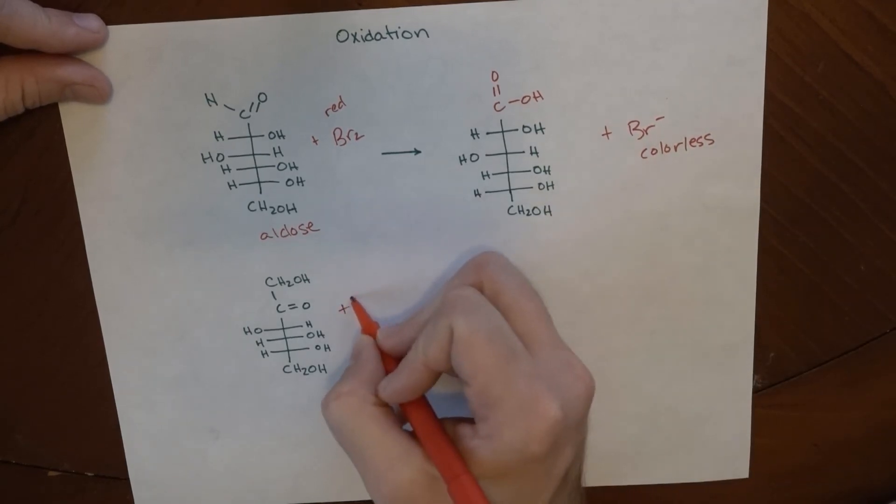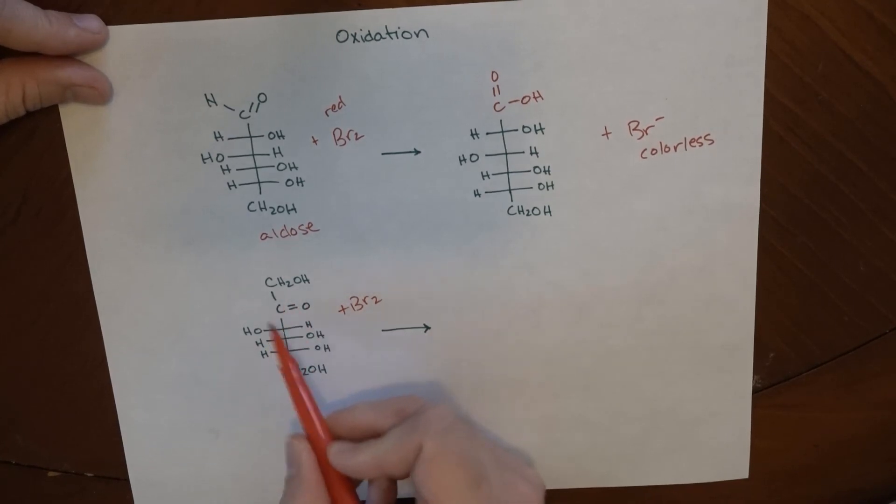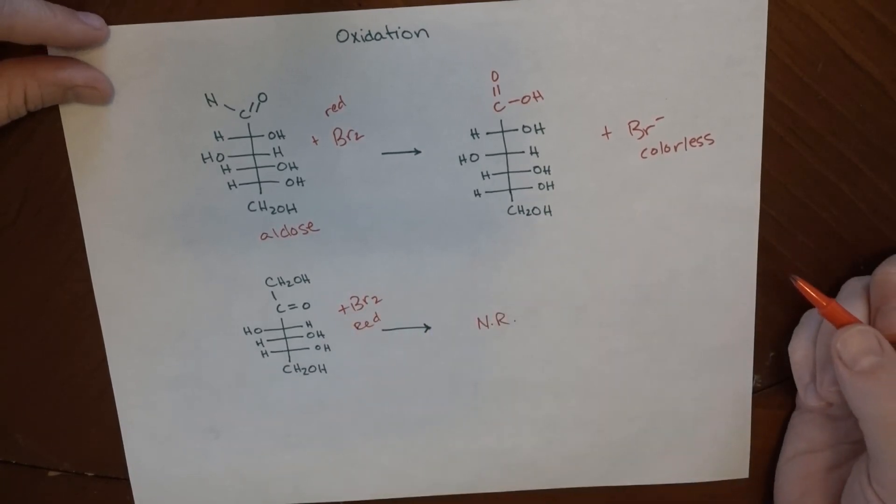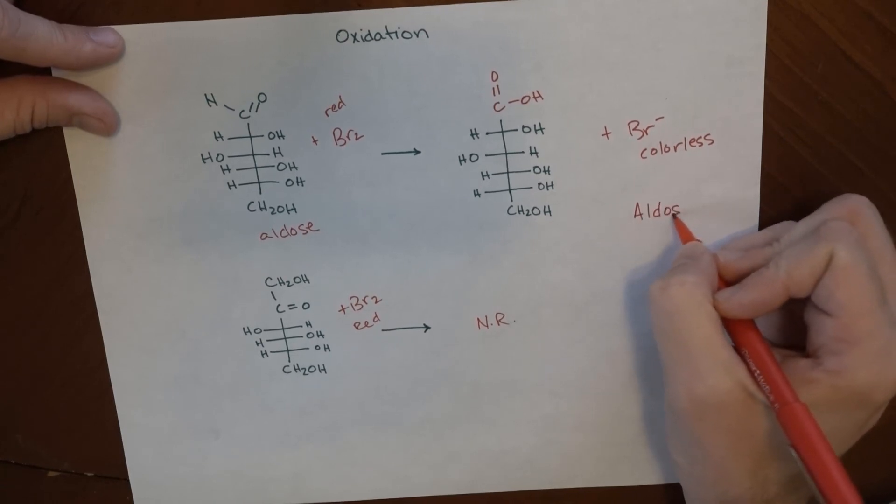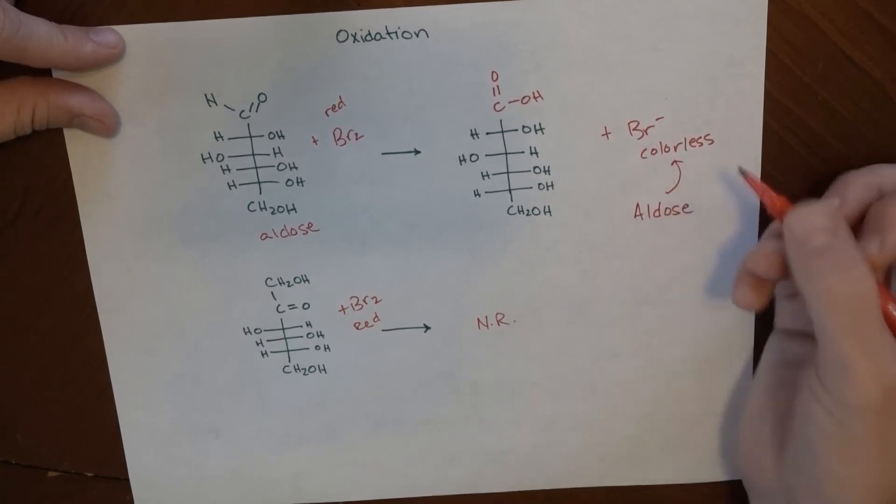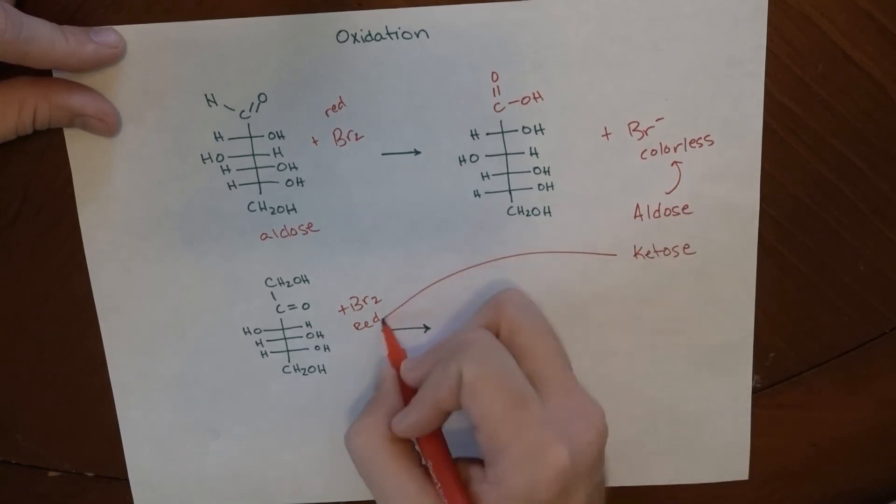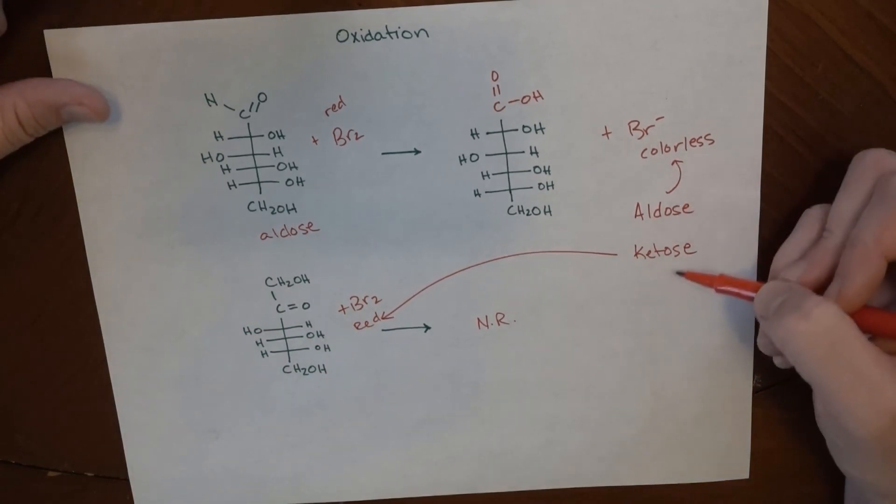If I try that with a ketose, this can't be oxidized any further. There's no other hydrogen to work with, so there is no reaction. So this stays red. This is a very good colorimetric determination. This is a good test to see if you have an aldose, because it would become colorless, or if you have a ketose, because it would stay red. These oxidation reactions are quite handy in trying to determine the difference between aldoses and ketoses.